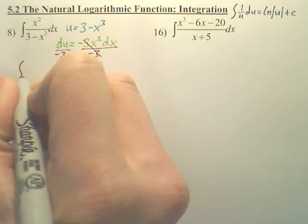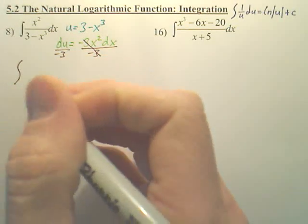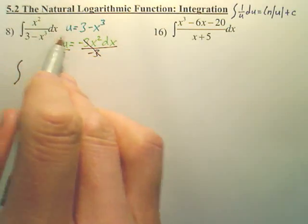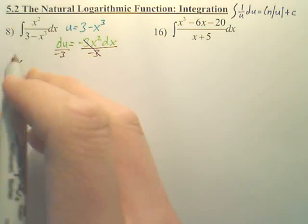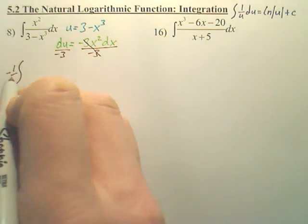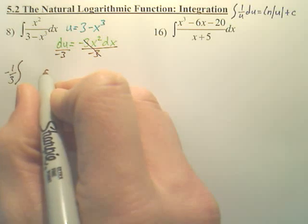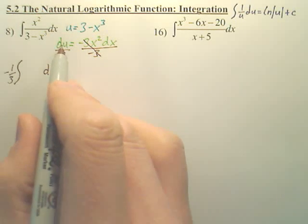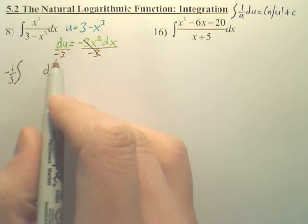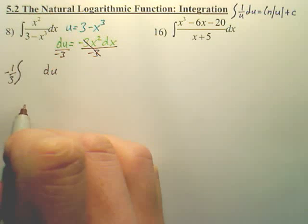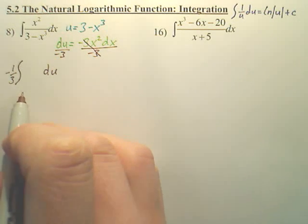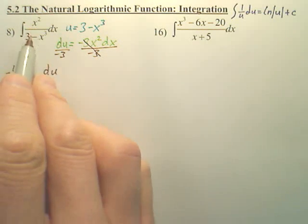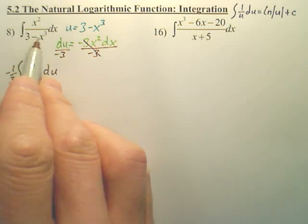My new integral, x squared dx is right here, so that would be negative 1/3 du. I just threw it out front instead of messing with it. And what's left was 1 over u, because u is on the bottom.